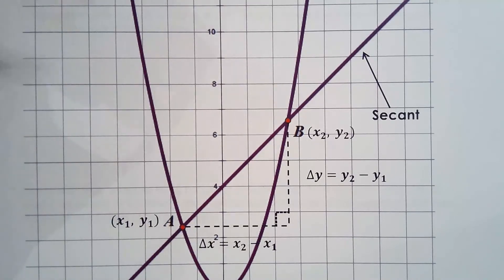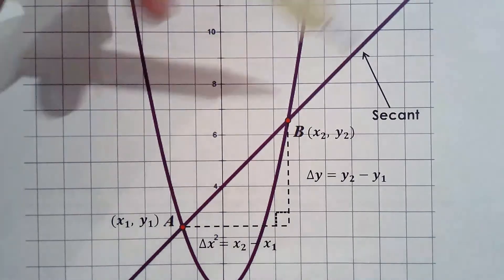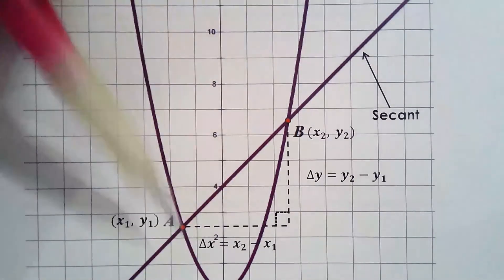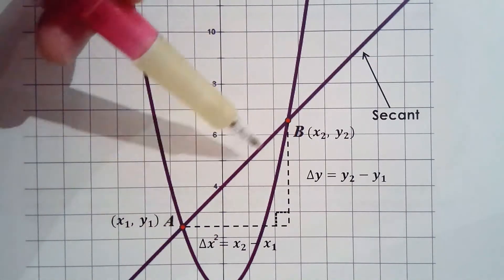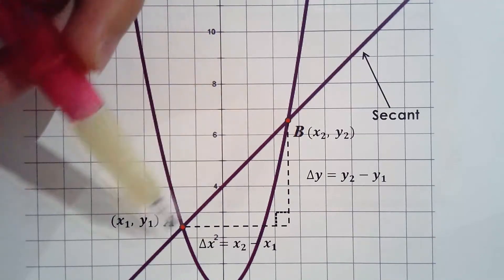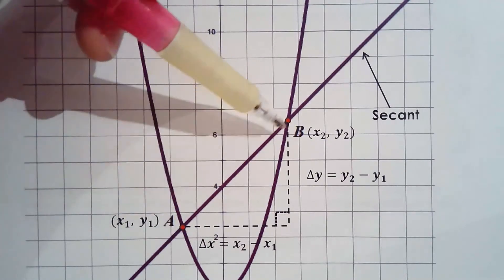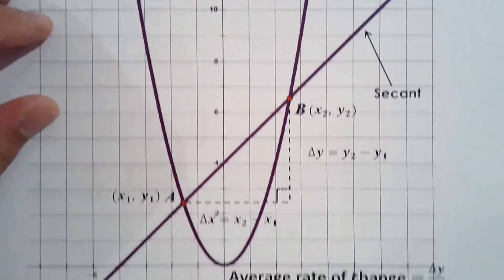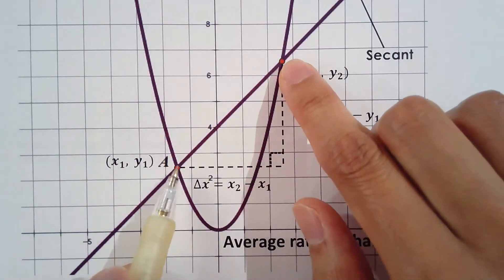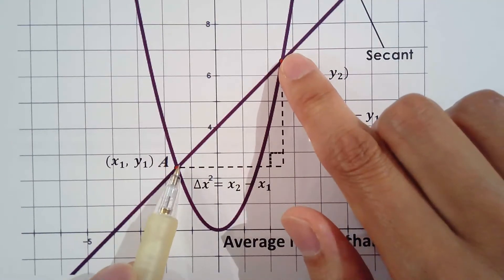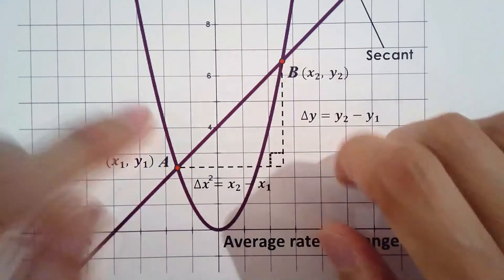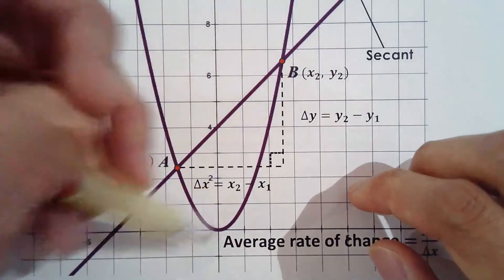How does that work? If your graph was actually just a line — imagine the secant line is your graph — the rate of change would be constant, and the average rate of change equals the slope of that line. But here you have a parabola. So why does the slope of the secant give us the average rate of change when we're focusing on two points?